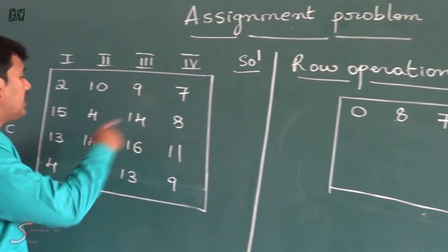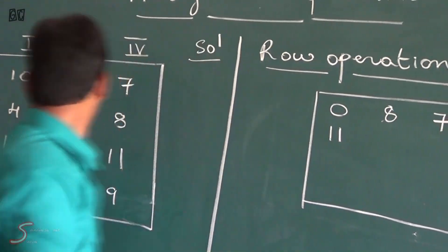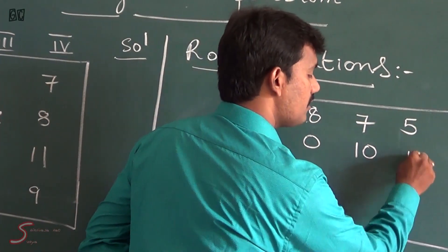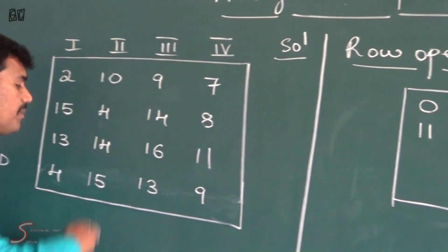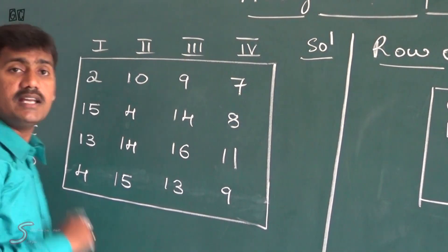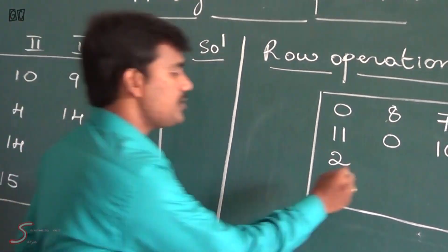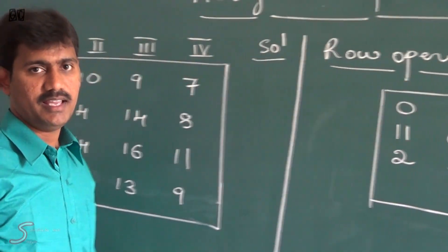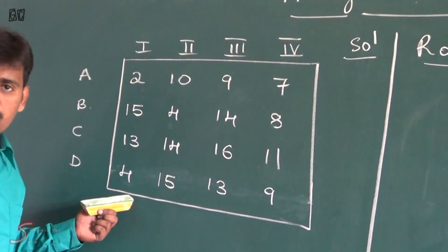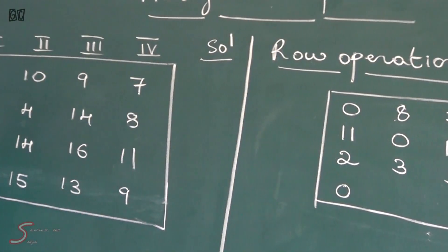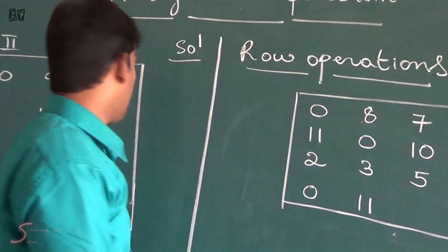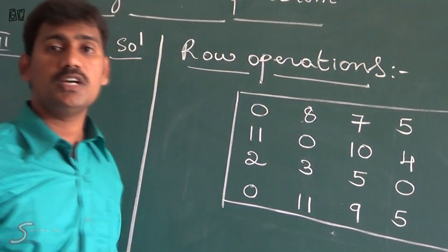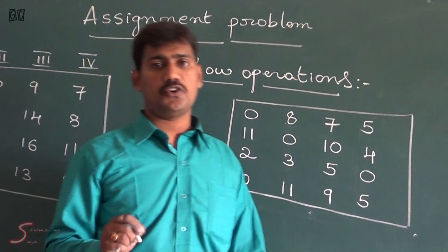In the second row the minimum element is 4: 15 minus 4 is 11, 4 minus 4 is 0, 14 minus 4 is 10, and 8 minus 4 is 4. In the third row the minimum element is 7: 13 minus 7 is 2, 14 minus 7 is 7, 16 minus 11 is 5, and 11 minus 11 is 0. In the fourth row the minimum element is 4: 4 minus 4 is 0, 15 minus 4 is 11, 13 minus 4 is 9, and 9 minus 4 is 5. That is the row operation complete.